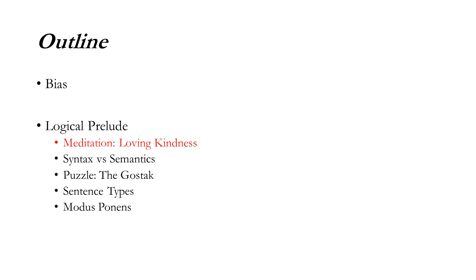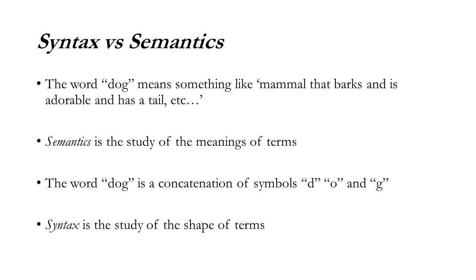Let me tell you a little bit about syntax and semantics. The word 'dog' means something like mammal that barks and is adorable and has a tail — that's semantics, the study of the meaning of words, terms, phrases, or sentences. The word 'dog' is a concatenation of symbols D, O, and G arranged in a certain way — that's the syntax. Syntax is the study of the shape of terms and sentences. So to make this crystal clear: syntax is just the shape, the way things are arranged; semantics is the meanings of those things that we've arranged.